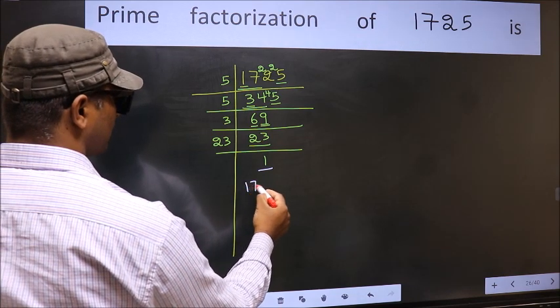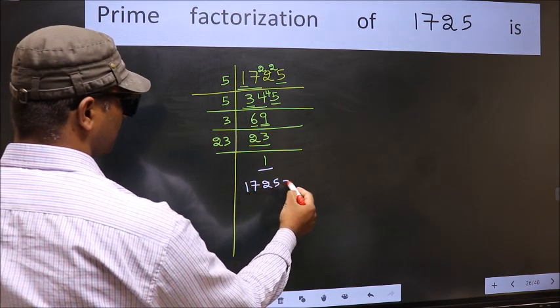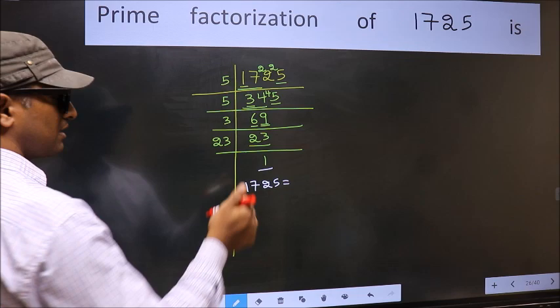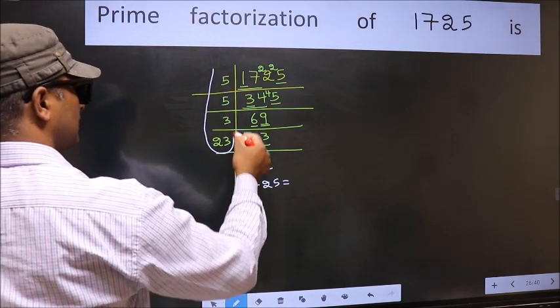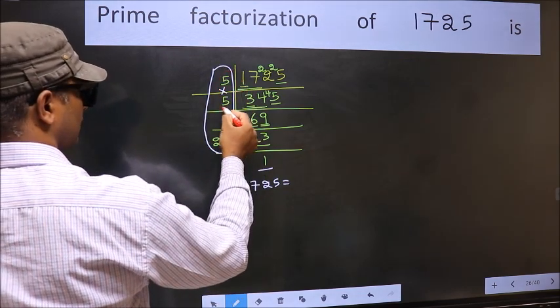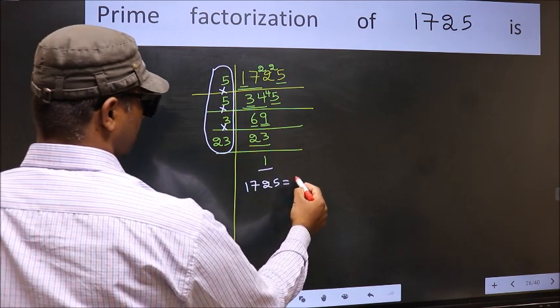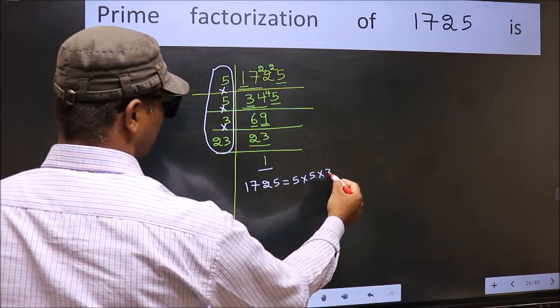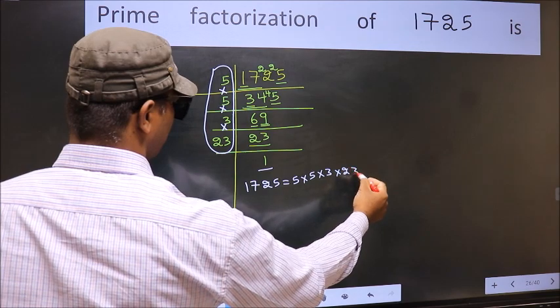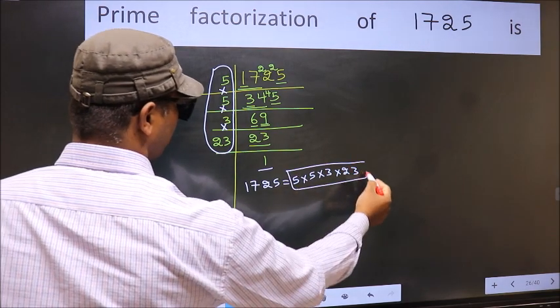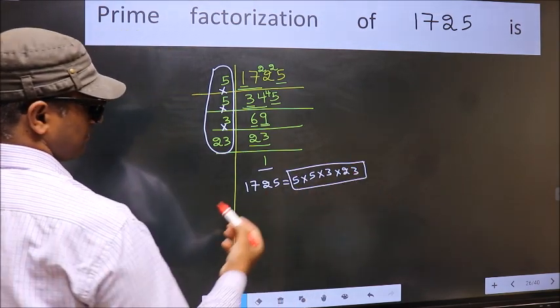So the prime factorization of 1725 is the product of these numbers. That is 5 into 5 into 3 into 23. This is the prime factorization of 1725.